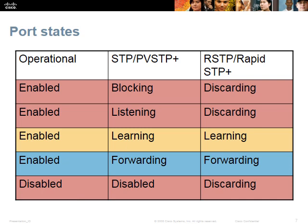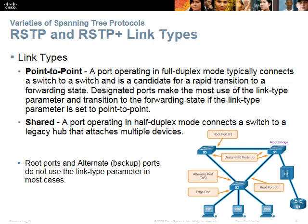The Rapid protocols conflate the blocking, listening, and disabled states into a single discarding state. In a point-to-point configuration, there are only two switches on a link. As soon as they exchange BPDUs, they can determine which one has the best path from their shared link to the root switch, and the appropriate switch can immediately set its port into the designated state, thereby avoiding the timers necessary with traditional STP. A shared link typically only occurs when dealing with a hub, a type of equipment that has been considered legacy for some time.